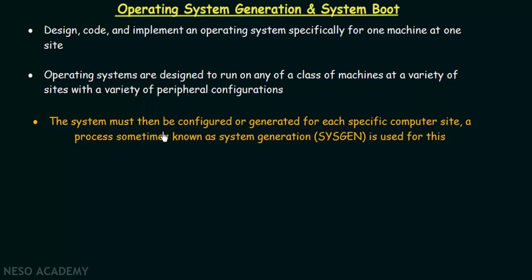The answer is that the system must be configured or generated for each specific computer site. A process sometimes known as system generation or sysgen is used for this. System generation helps in generating the operating system in such a way that it will be compatible and can work for that specific machine. There is some information that must be determined by the sysgen program so that it will know how to generate a particular operating system for a particular machine.